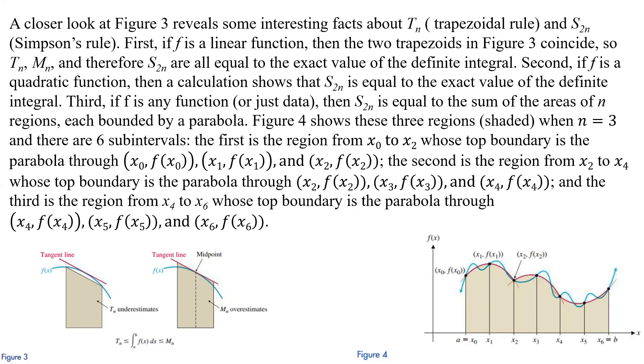Now figure 4 over here on the bottom shows these three regions, which we have, so it's going to be 1, 2, 3. Those are the three kind of regions.